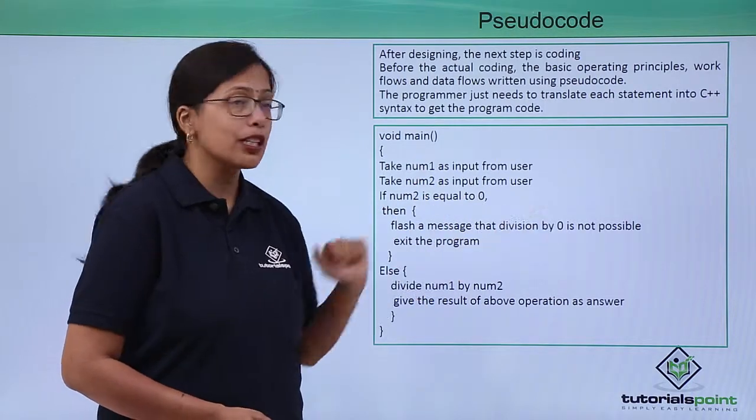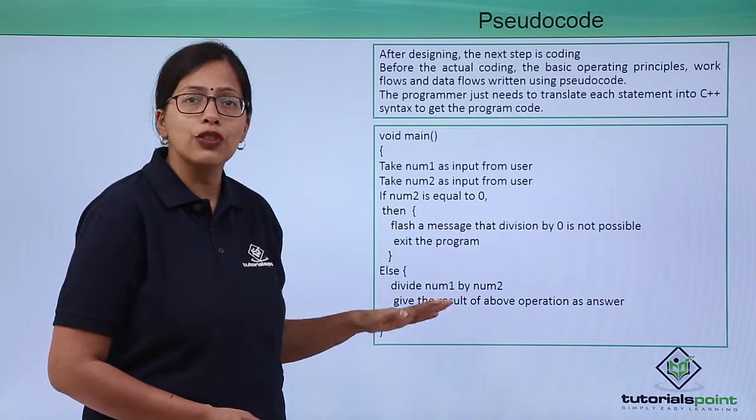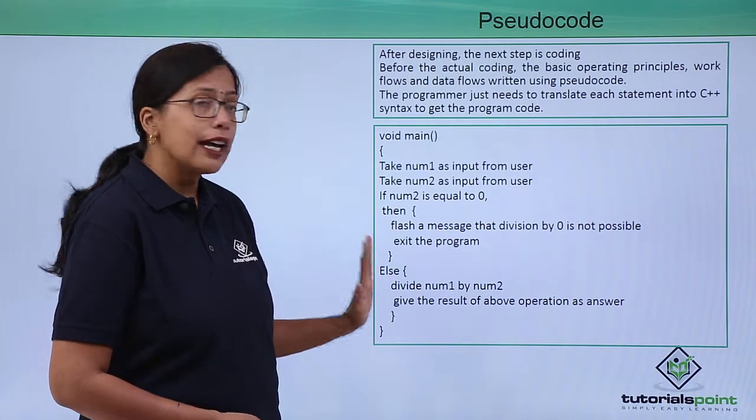then flash a message. Otherwise, you do something else. So this all has been written here complete with the control structures: if, then, else.